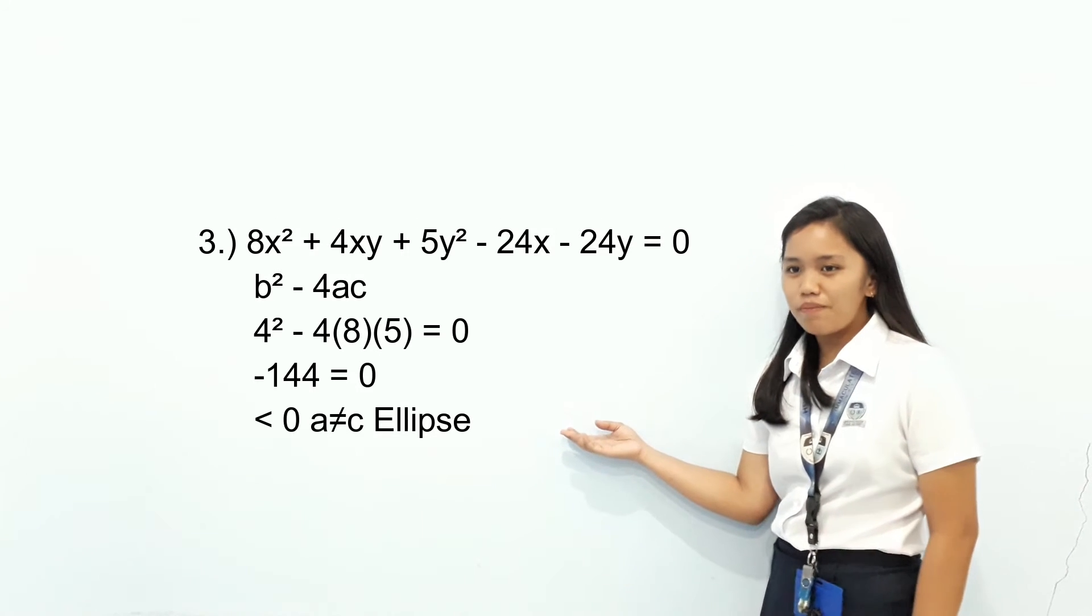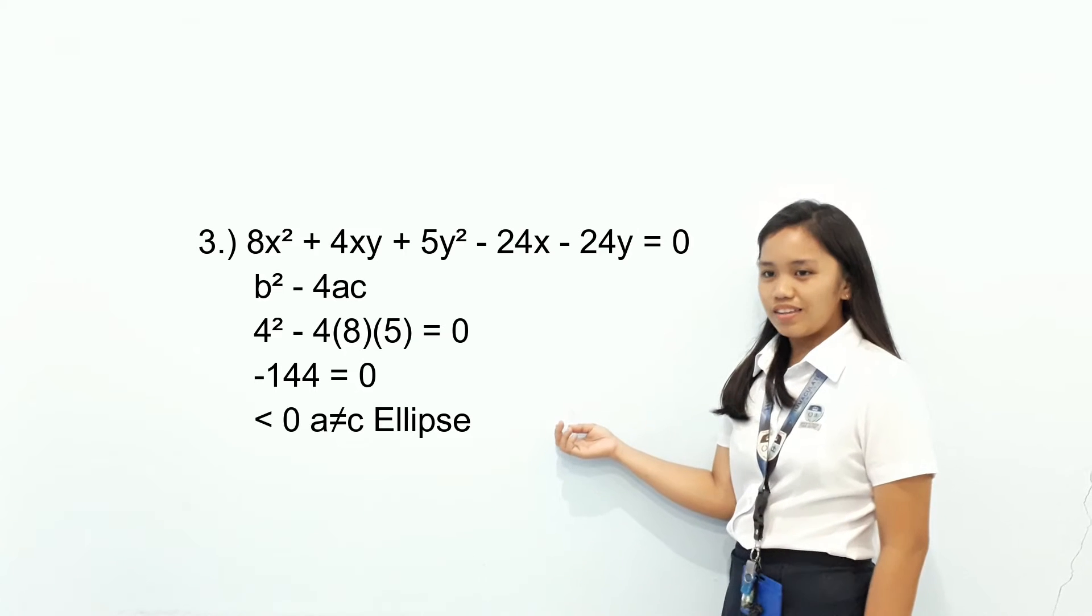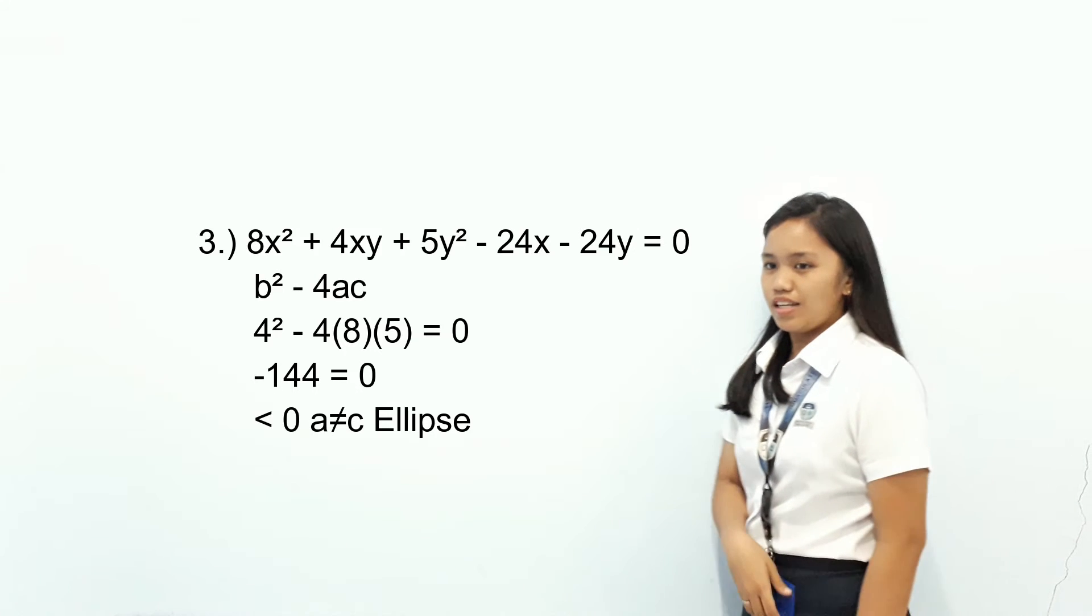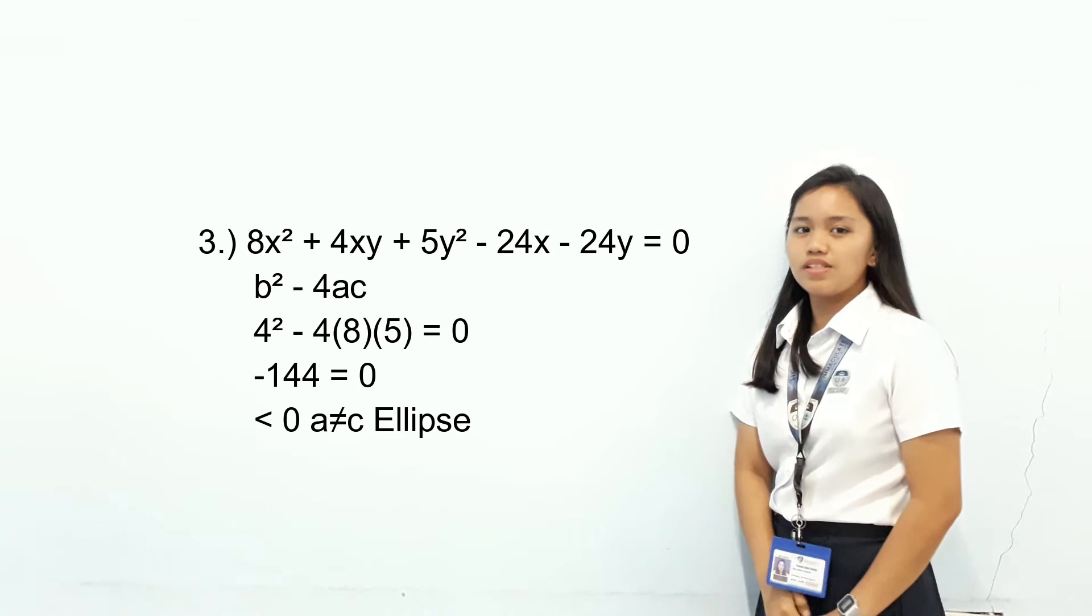4² - 4(8)(5) is less than zero. The answer is ellipse because A is not equal to C.